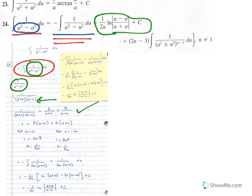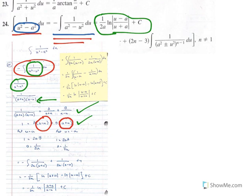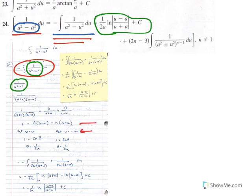The denominator factors as a difference of two squares: (a + u)(a − u). We set up this form of the partial fraction decomposition, multiply both sides by the LCD to get the basic equation, then work backwards to find A and B. If you let u = a, then a minus a is 0, and you solve for B: 1 = 2a times B, so B = 1 over 2a. Then let u = negative a to solve for A, and you find A = 1 over 2a. Substitute for A and B to rewrite the integrand.